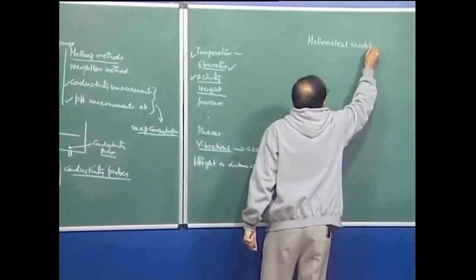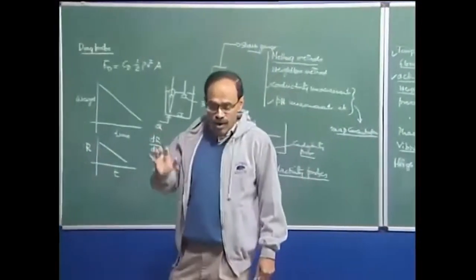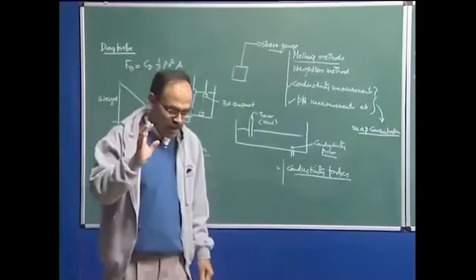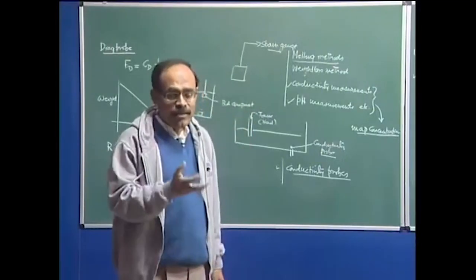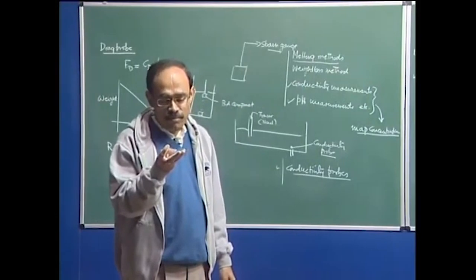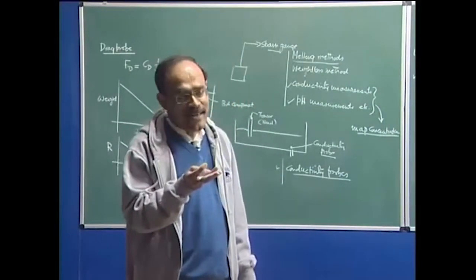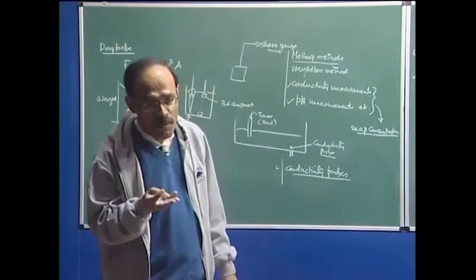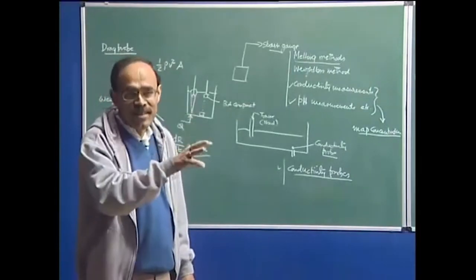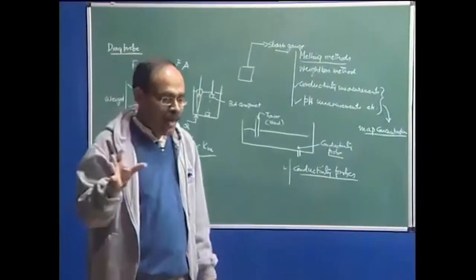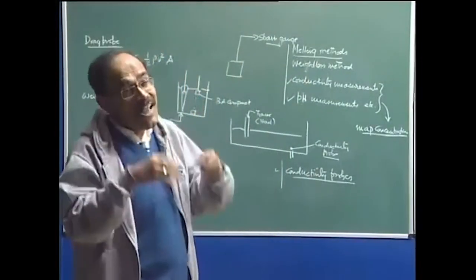Before proceeding to mathematical modeling, let me briefly summarize what we have done in the physical modeling section. There are similarity criteria which must be respected in order to make a physical model: geometrical, mechanical, thermal, and chemical similarities. Geometrical and mechanical similarities can always be satisfied — there is no problem. But in reduced scale models, particularly when using water as the representative fluid, it is really difficult to satisfy all the similarity numbers.